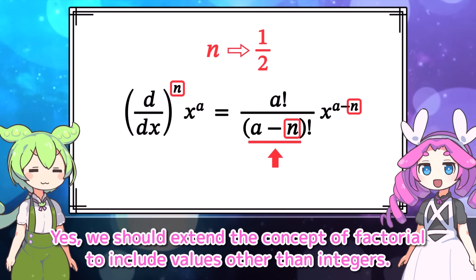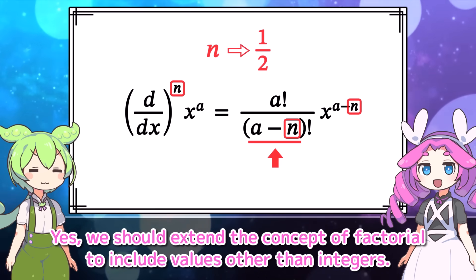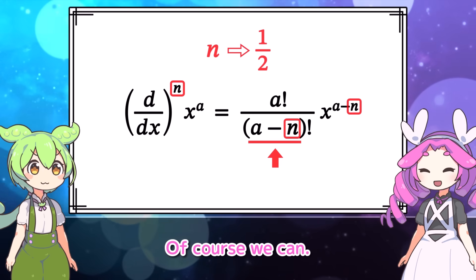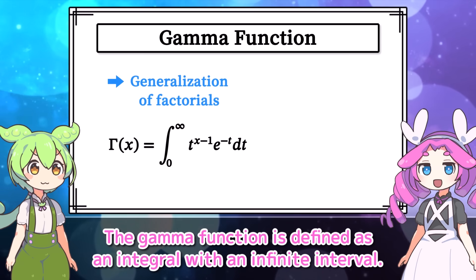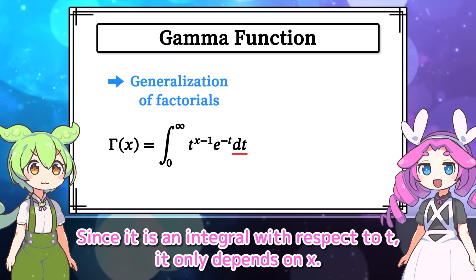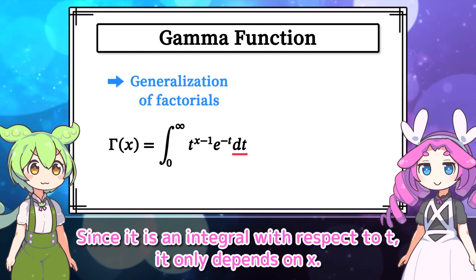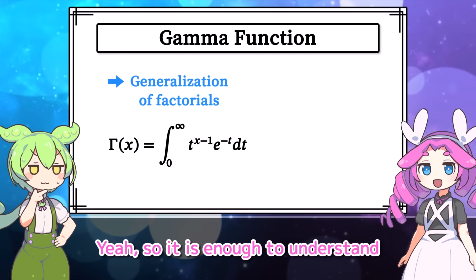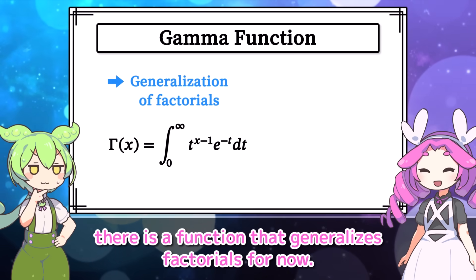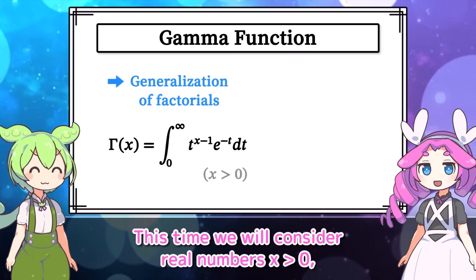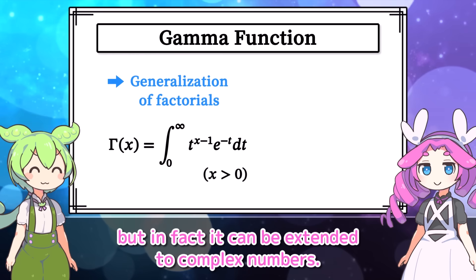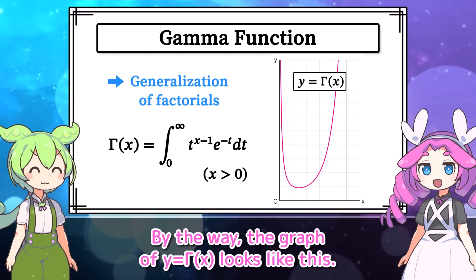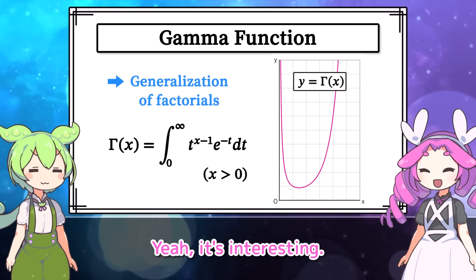We should extend the concept of factorial to include values other than integers. There is something called the gamma function, which is a generalization of factorials. The gamma function is defined as an integral with an infinite interval. Since it is an integral with respect to t, it only depends on x — it is a difficult expression. This time we will consider real numbers x greater than zero, but in fact it can be extended to complex numbers. The graph of y equals gamma of x looks like an amazing and interesting shape.